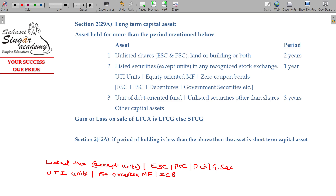Equity shares, preference shares, debentures, and government securities are all listed securities. UTI units and equity-oriented mutual funds are also included. In a mutual fund, you are a unit holder rather than a shareholder. The fund and the project represent a share of investment, and a mutual fund is essentially a collective share of investment.